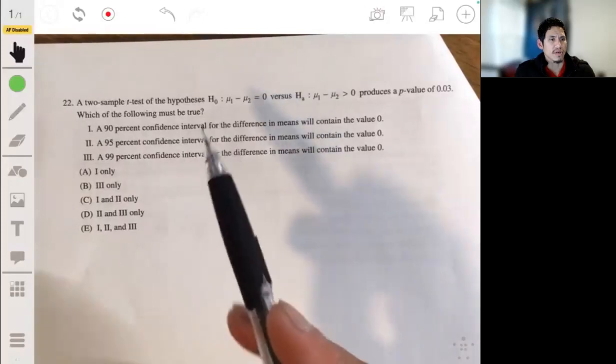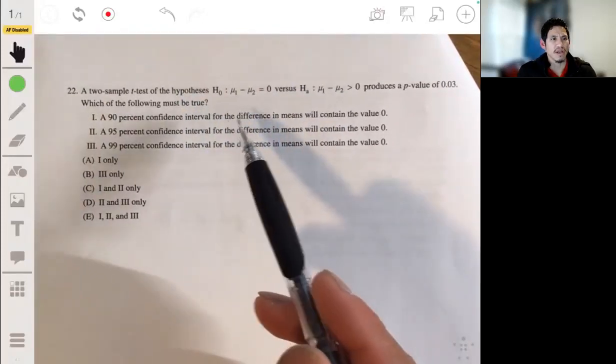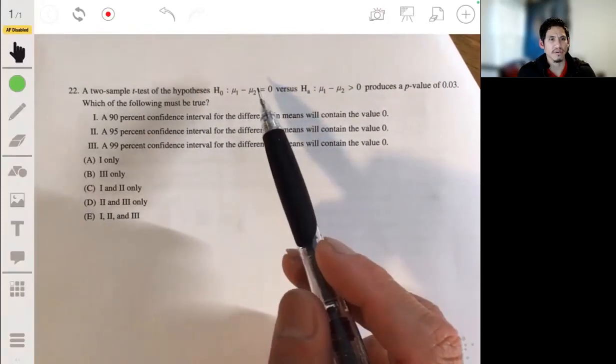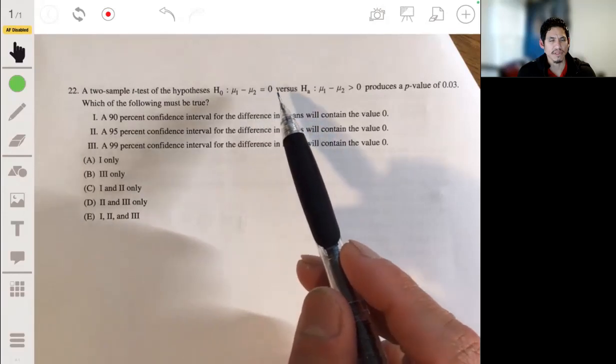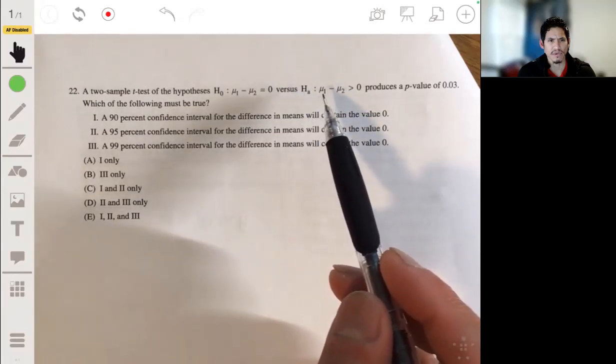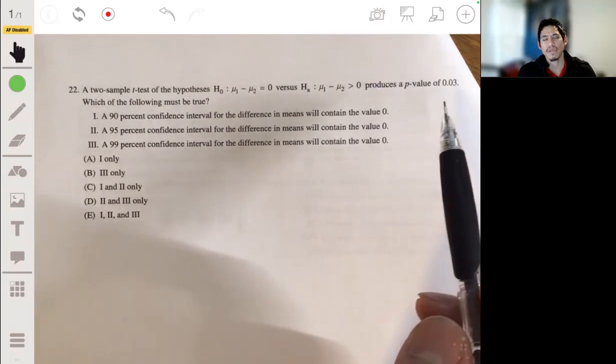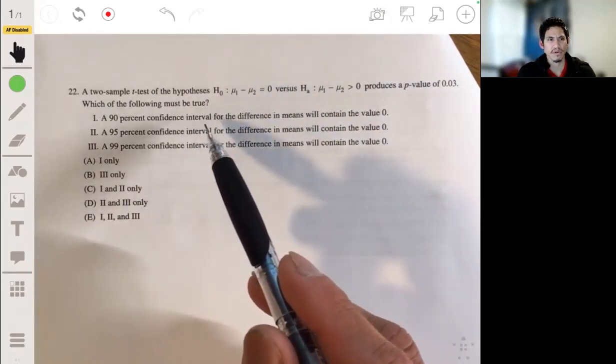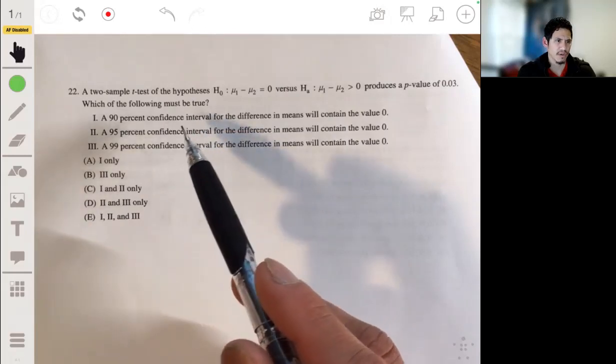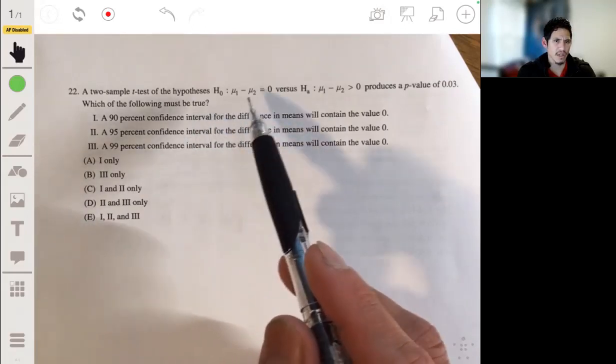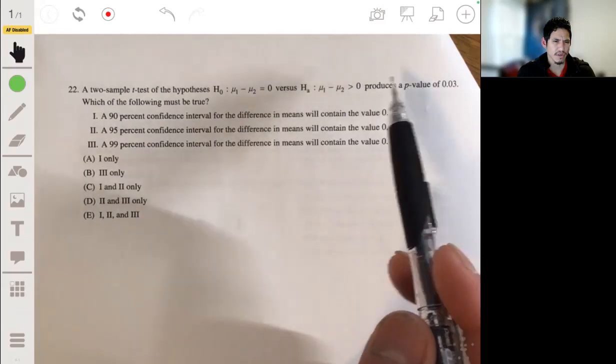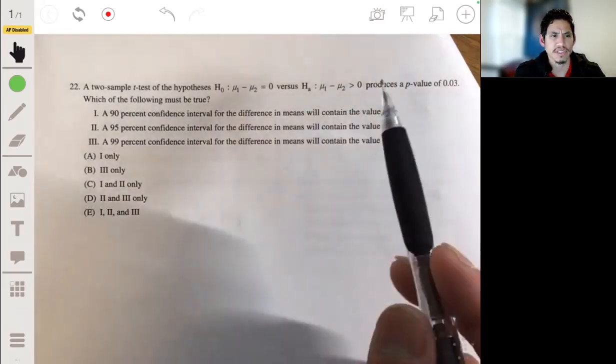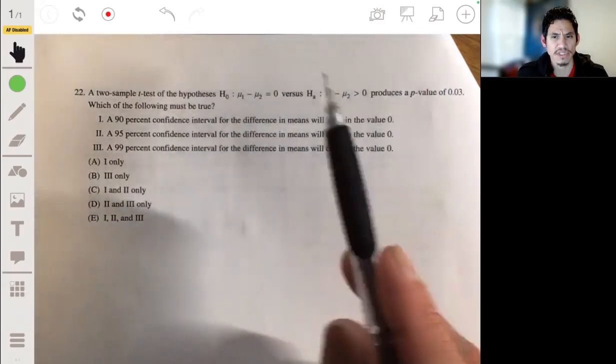Number 22, a two-sample t-test of the hypotheses H0: mu1 minus mu2 equals zero versus the alternative mu1 minus mu2 is greater than zero, has a p-value of 0.03. Which of the following must be true? Okay, so this is referring to a one-sided test, remember?